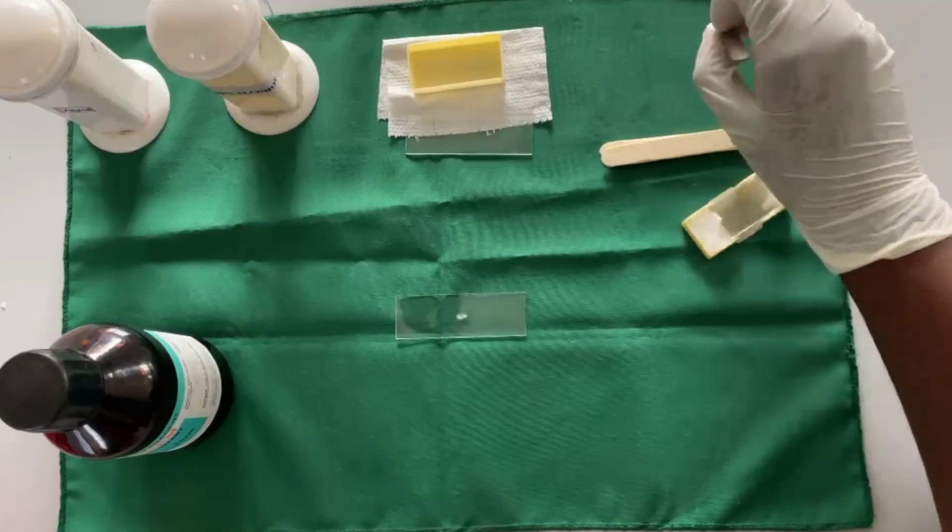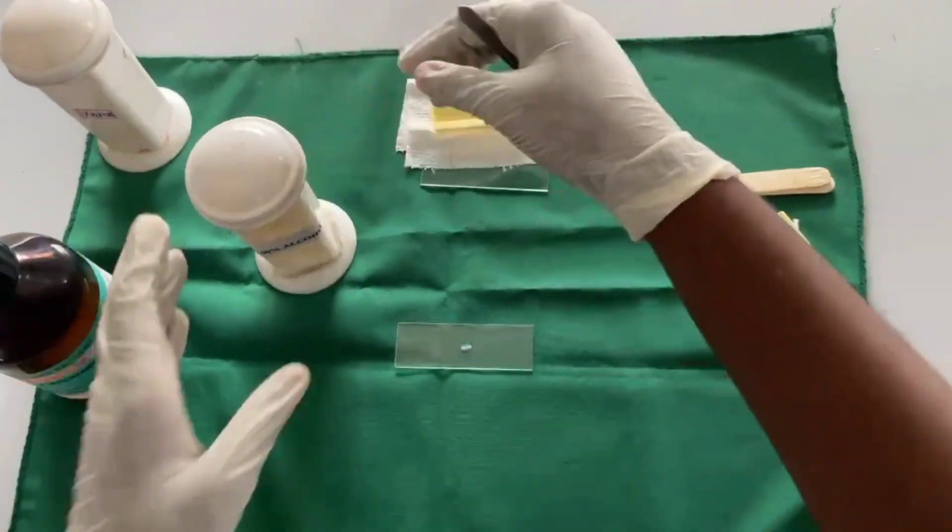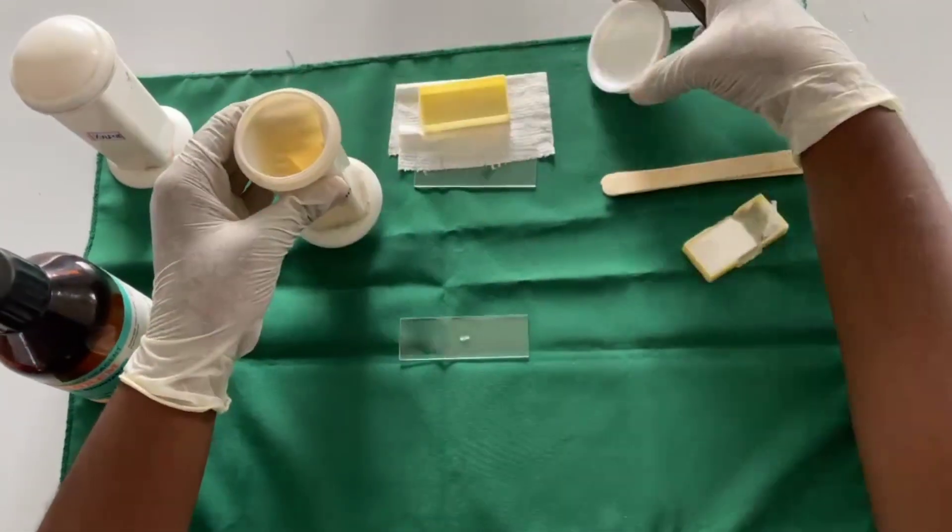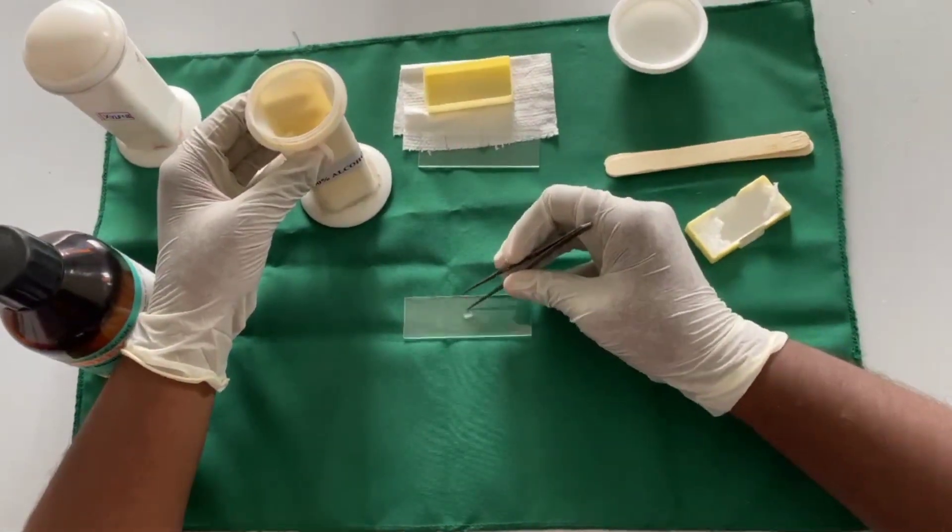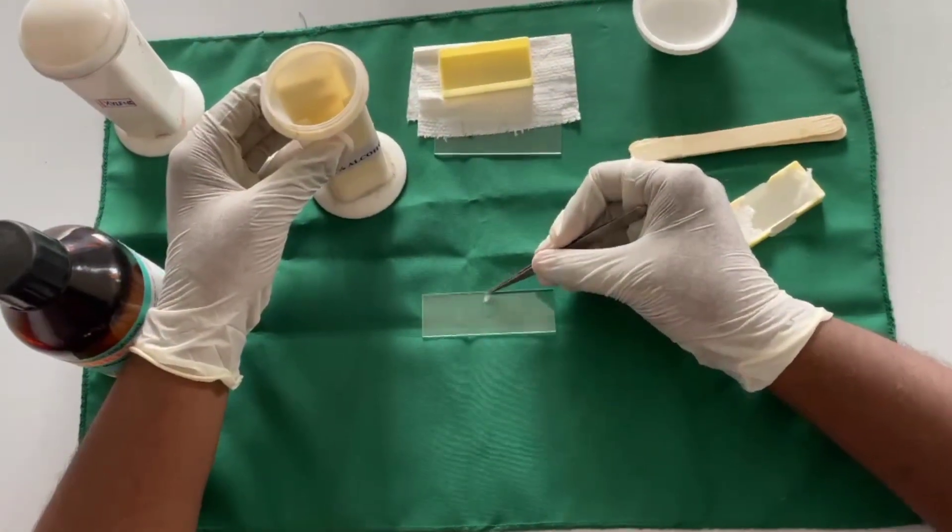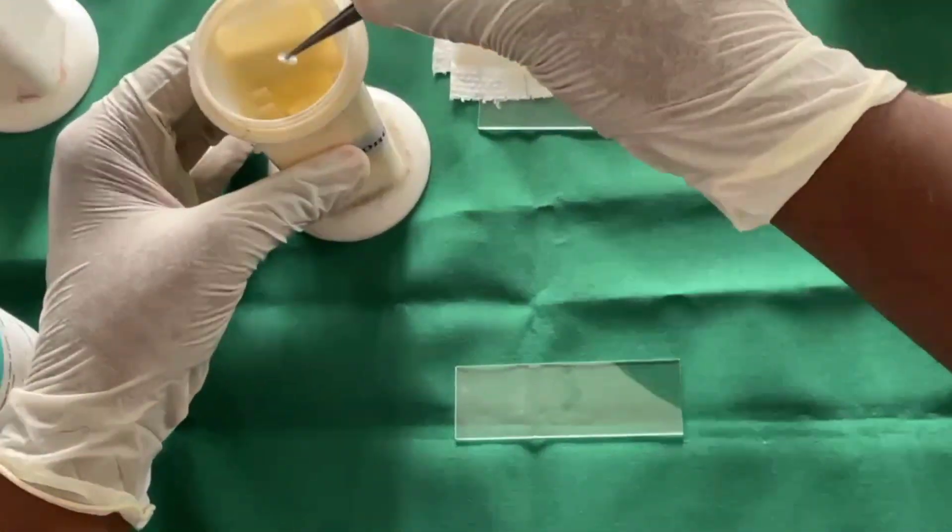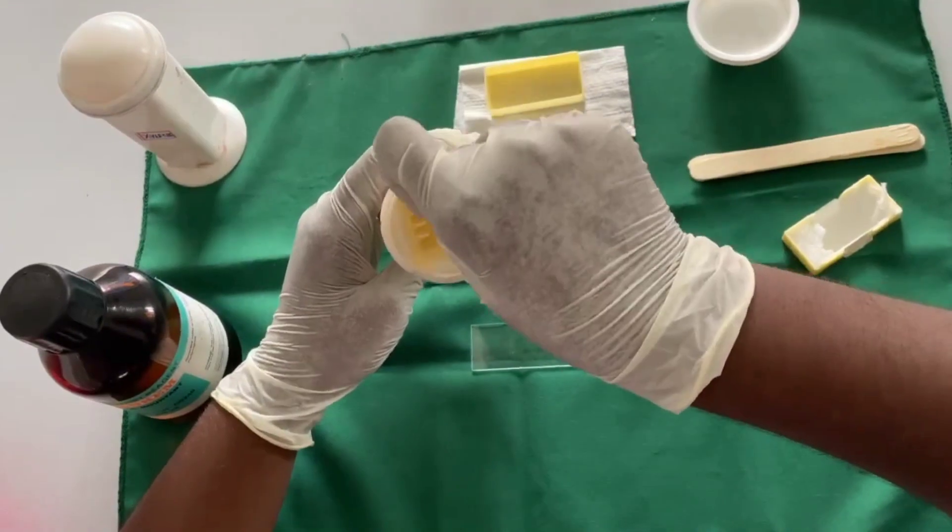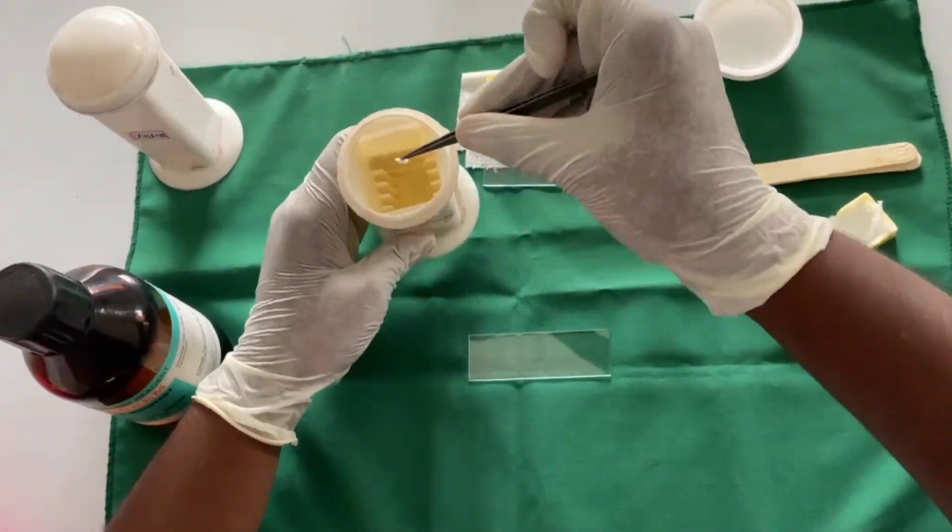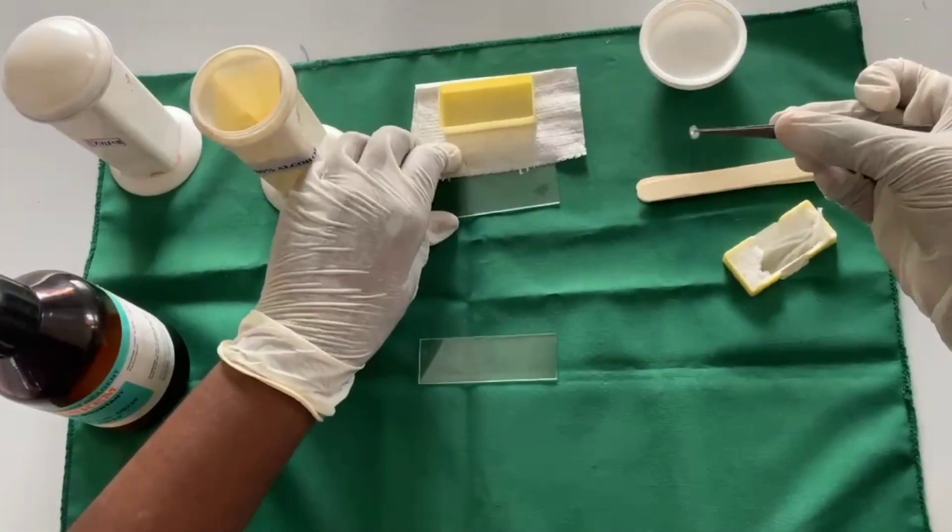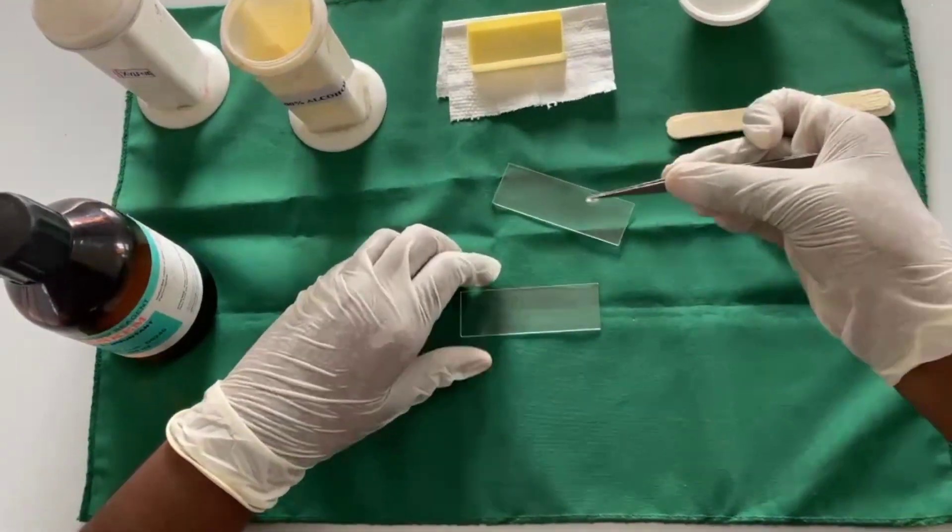The specimen is placed on a glass slide. Then the specimen is dipped in 100% alcohol for about 5-6 seconds for dehydrating the specimen.